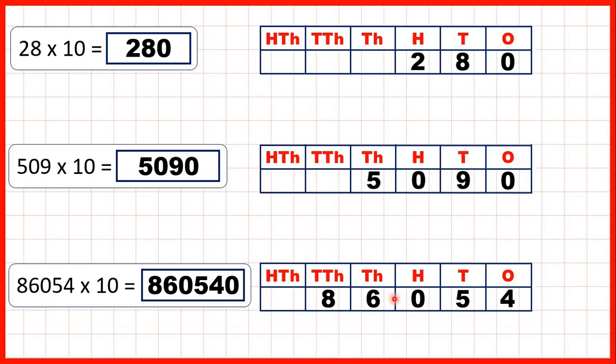Then we had 86054. If we move the digits one square to the left we need to write a zero in our empty ones column to give us our answer.